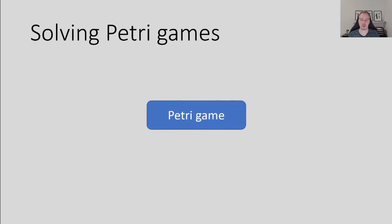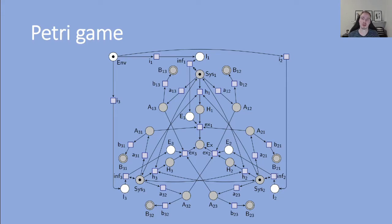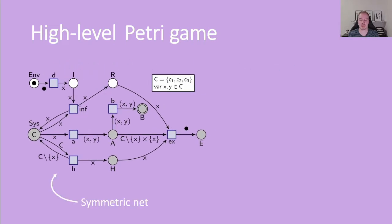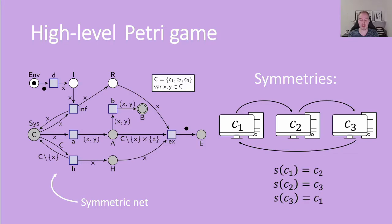We go back to our example for a moment. As we already know, the game has a lot of symmetry in it — each computer basically behaves the same. Thus, we can easily build a concise high-level representation of it. We use an underlying symmetric net, which is a high-level formalism ensuring that all colors in the same color class behave symmetrically. This allows us to directly read the symmetries of the high-level net, which are just permutations on color classes. In this case, we have the color class C with the three computers and with the three colors C1, C2 and C3 representing the three computers. The symmetries then just permute the three computers.